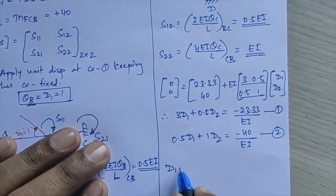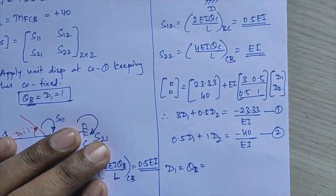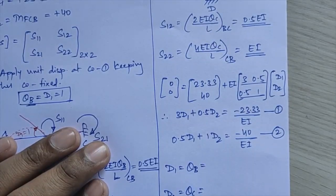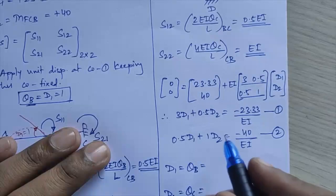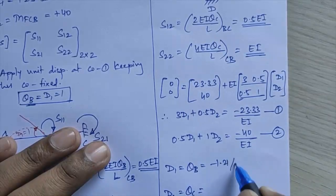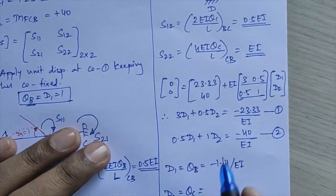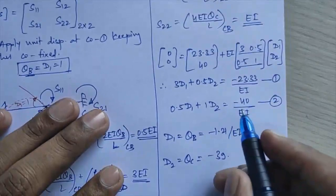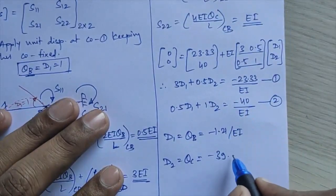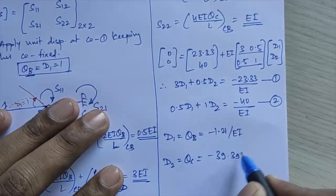Solving equations 1 and 2, we get D1 = theta B = −1.21/EI and D2 = theta C = −39.39/EI.